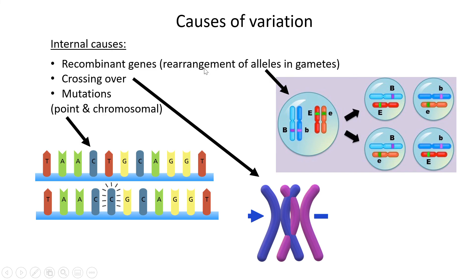The second internal cause is crossing over during interphase. Chromosomes generally exchange DNA before meiosis — one chromosome from mom and one from dad exchange segments, making the resulting DNA genetically different. In each new offspring this happens again, and it's completely random where it occurs, when it occurs, and which gametes are involved.